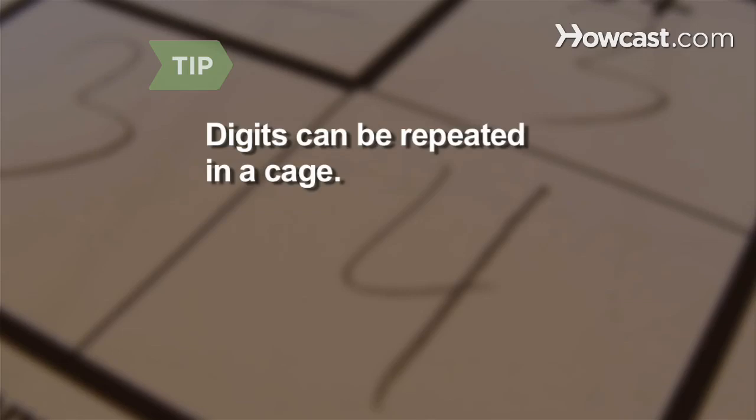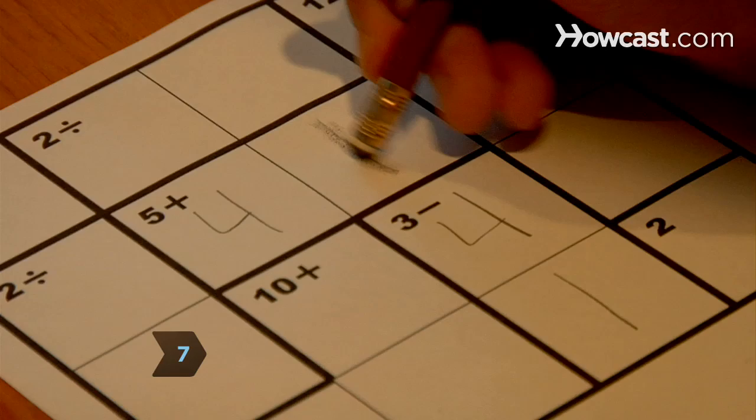Step 7. Experiment with different numbers in the squares you're unsure of, using your eraser when needed.